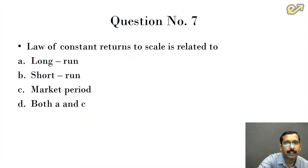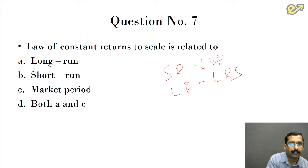Law of constant returns to scale is related to—in short run we have the law of variable proportion. In long run, you have the law of returns to scale. So the answer is long run, which is option one.